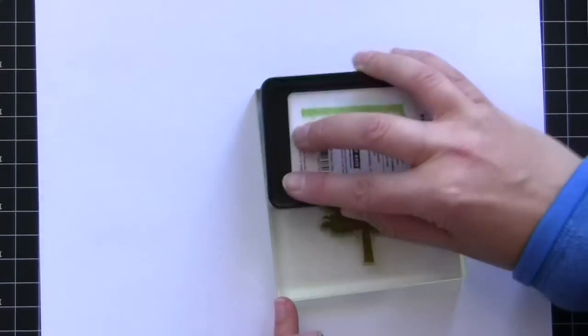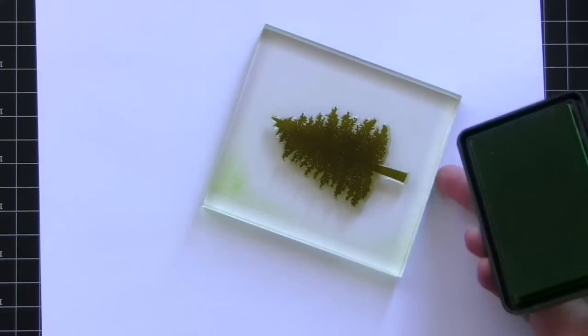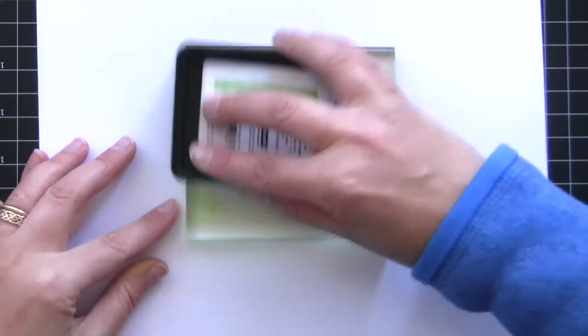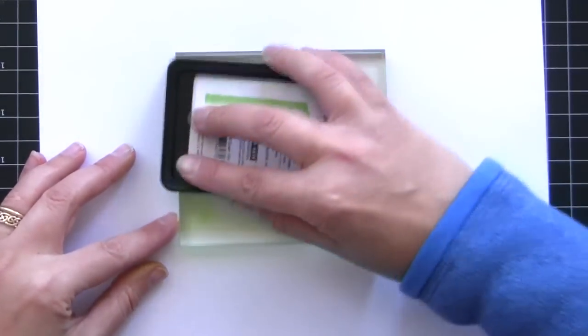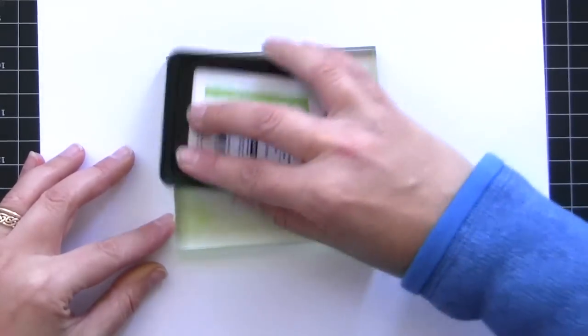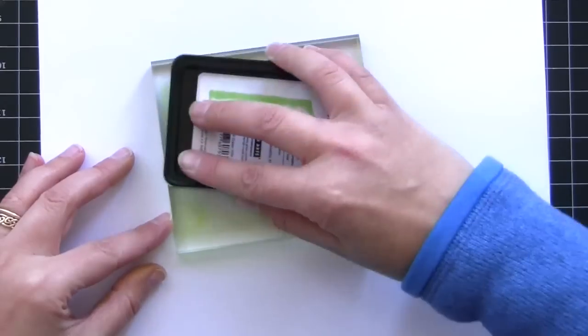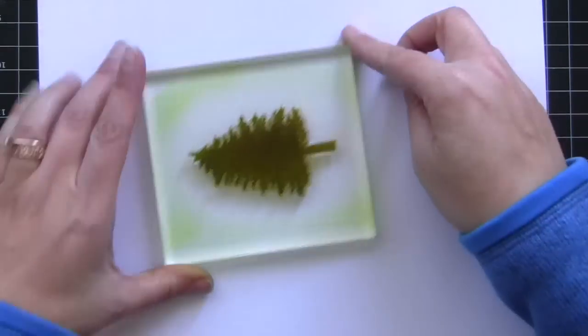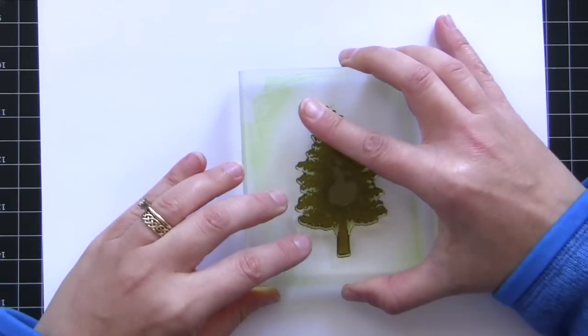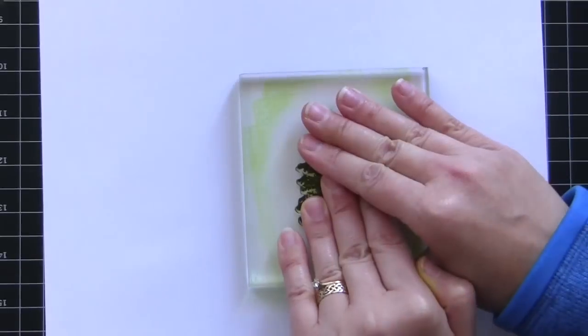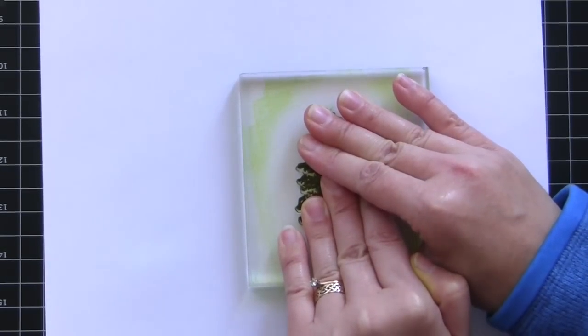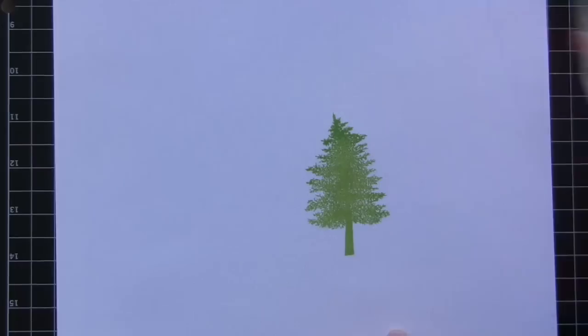You want to start by inking first in one direction like this, and then I like to turn my stamp and then ink it some more this way. What this does is it really helps get the ink so that it covers the whole surface. This ink pad has like a felted top and it has little lines in it, so if you don't do this, sometimes the lines will show up.